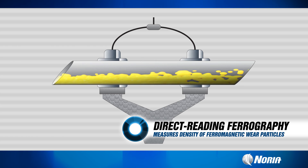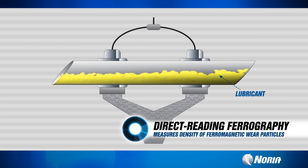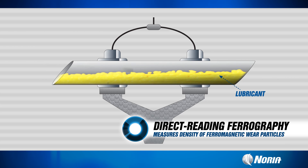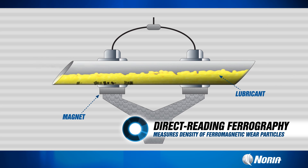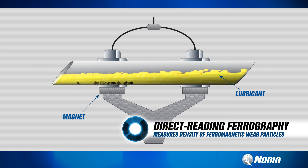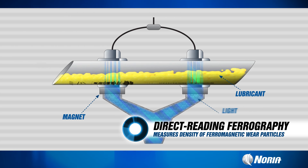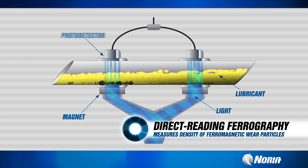The way direct reading ferrography works is by running the sample through a precipitator tube over a high-powered magnet. The large wear particles are more quickly attracted to the magnet and get pulled out at one end of the slide, while the smaller particles get gathered at the exit end of the slide.